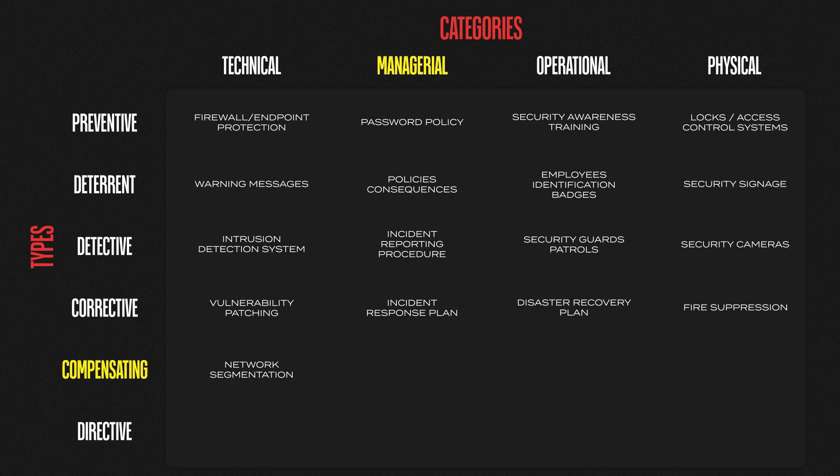A managerial compensating control could be a dual authorization policy requiring more than one approval for high-risk tasks like financial transactions, access to sensitive data, or configuration changes. Operationally, hiring temporary staff to handle high workloads — such as extra security staff for a large event — serves as a compensating control. Physically, a backup power generator that kicks in during a power outage keeps the business running.